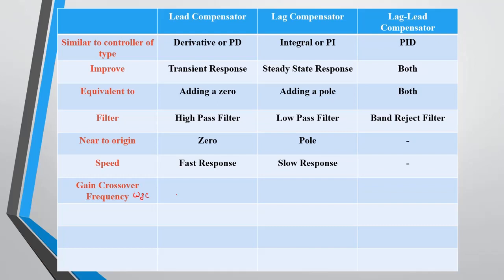The gain crossover frequency, omega-gc, is shifted to a higher value in the case of lead compensator. For lag compensator it is shifted to a lower value, but for lag-lead the response is usually neutral. Regarding rise time, lead compensator improves transient response, meaning rise time is decreased.